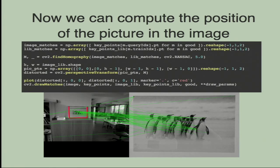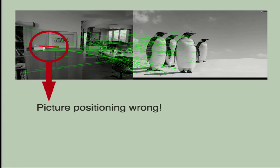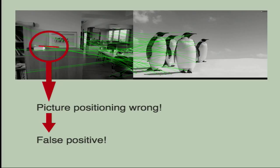Let's see how we can use this method to exclude false positives. In this case we have a lot of matches, so it would induce us to think that we have recognized the picture — but the picture is not the same. If we compute the picture positioning, we can note that it is wrong: the red rectangle does not fit with the real position of the picture. So we have a false positive, and we have found it because of the wrong positioning.